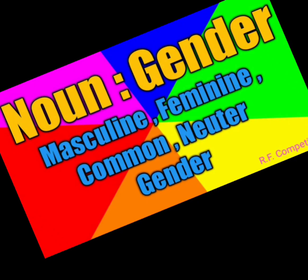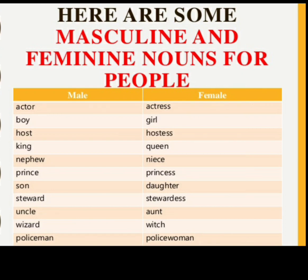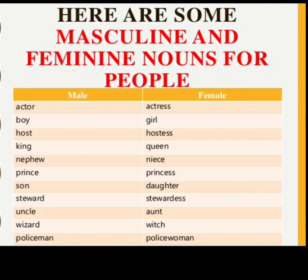Now for nouns as a gender, they are divided into four categories: masculine, which stands for male; feminine, which stands for female; common, which stands for both male and female; and neuter, which stands for non-living things. You should know how to change masculine into feminine. In your grammar book, pages 18 and 19, a table is given which you have to learn and understand clearly.